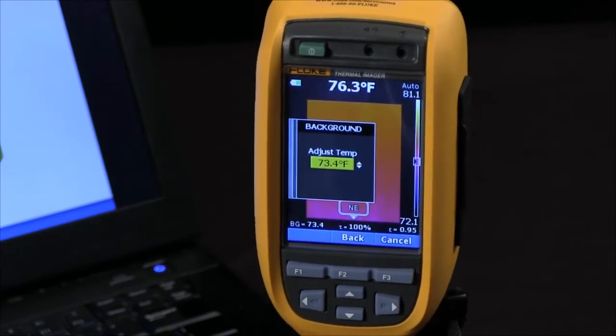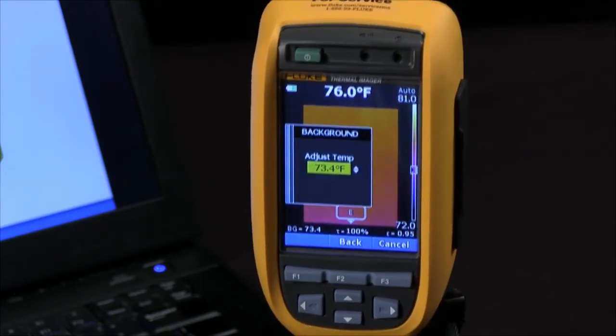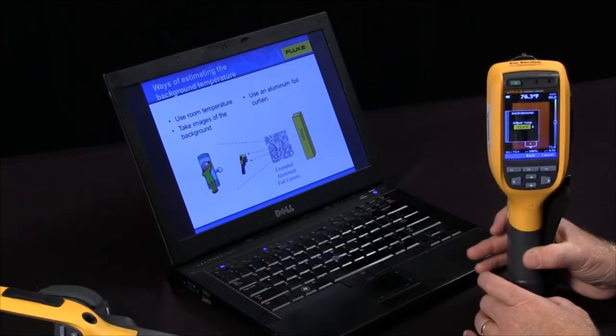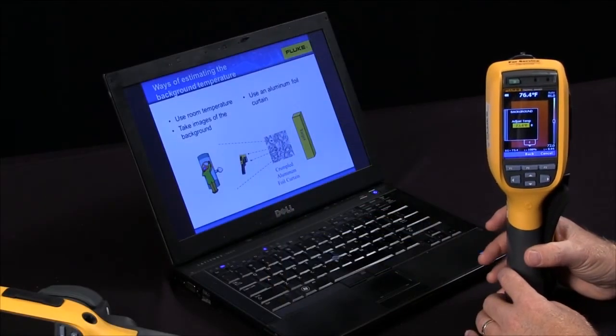So that's how we can determine if we need to use the background temperature, what it is, and how we can enter it into our Fluke thermal imager.